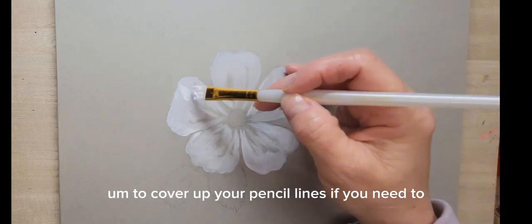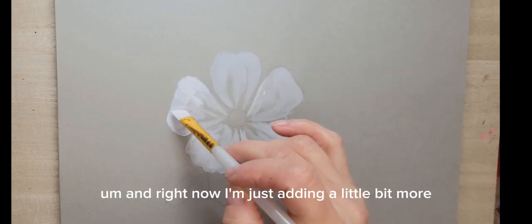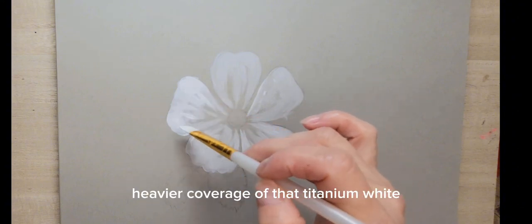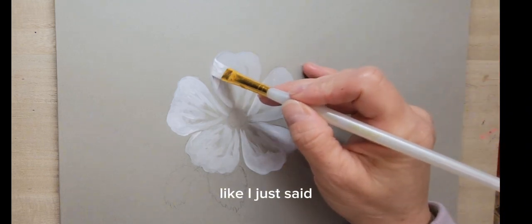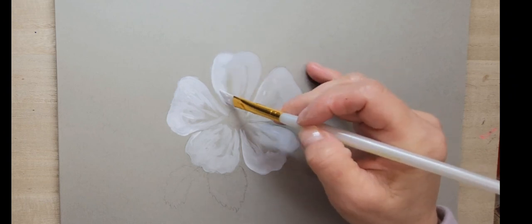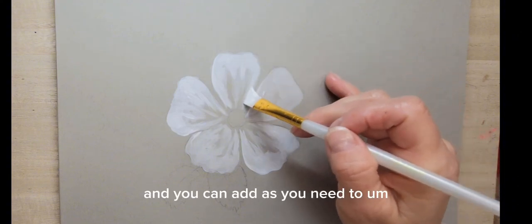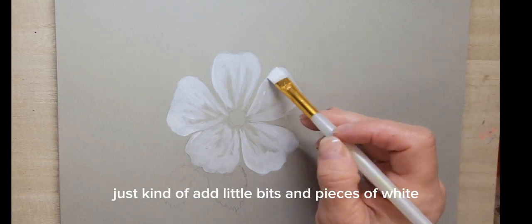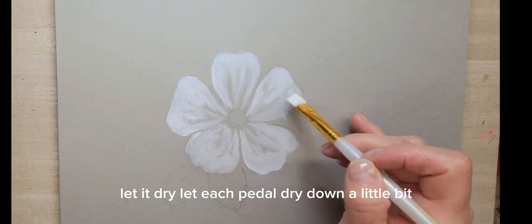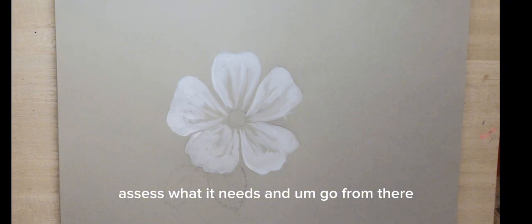You can just keep going over with that titanium white to cover up your pencil lines if you need to. You can do that in a few layers. Right now I'm adding a little bit more heavier coverage of titanium white around the edges of the petals just to cover those pencil marks. Add as you need to, let it dry, let each petal dry down a little bit, assess what it needs, and go from there.